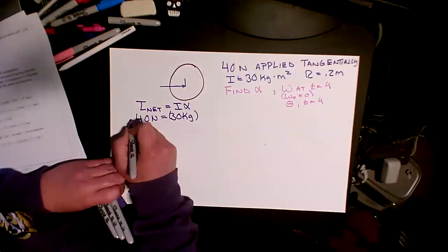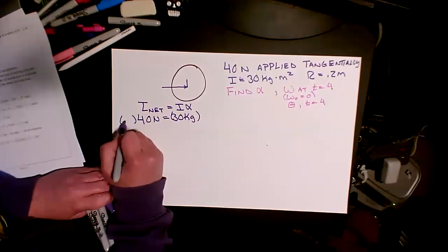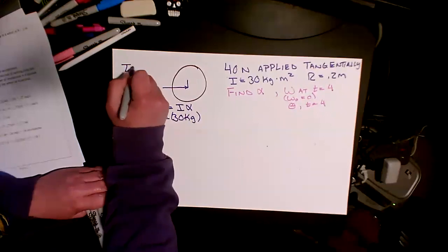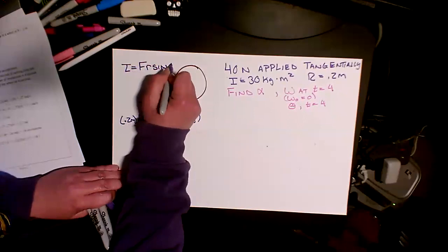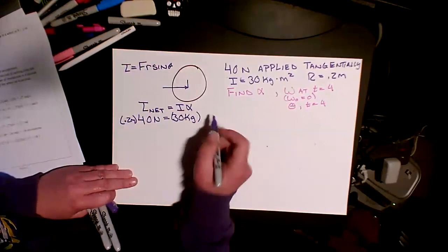Oh, 40 newtons, I forgot my distance. 40 newtons applied at 0.2 meters. Let's remember torque is FR sine theta. Cool. So 30 kilograms, and we want alpha.